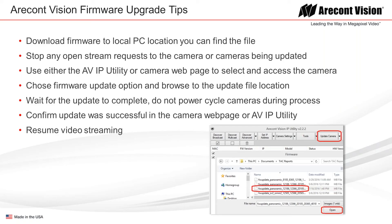Whether you're using the IP utility or the webpage, browse to the update file location and select it. The update will start and usually takes just a few seconds. The one major tip: do not power cycle the cameras during that process. There is a point during the firmware update where it is essentially overriding the operating system. If the power went out at exactly that time, it could create an issue. So: stop the streams first, and make sure you don't turn the camera off after you start the update until it's complete.